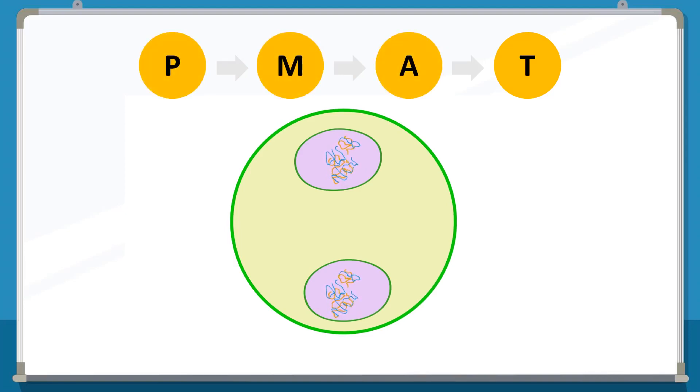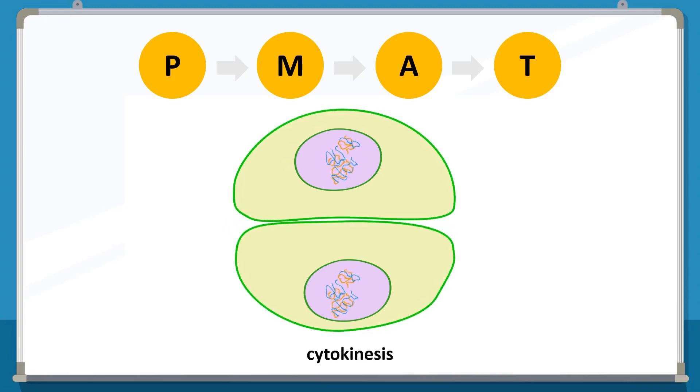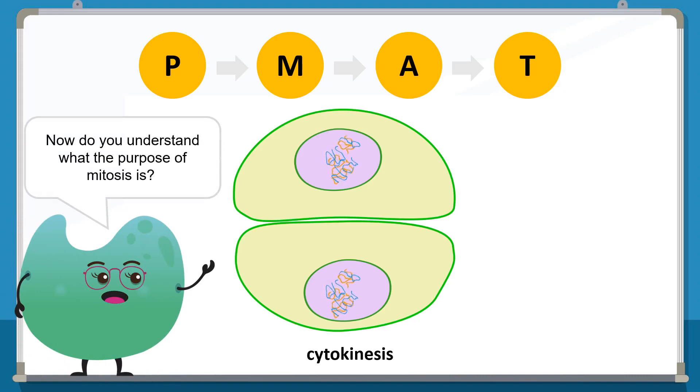After all the phases of mitosis, the cell undergoes cytokinesis, which divides the cell into two halves. The cell organelles are replicated by now. They are now split between the two halves of the cell. The two daughter cells produced as a result of mitosis are identical. Now do you understand what the purpose of mitosis is?